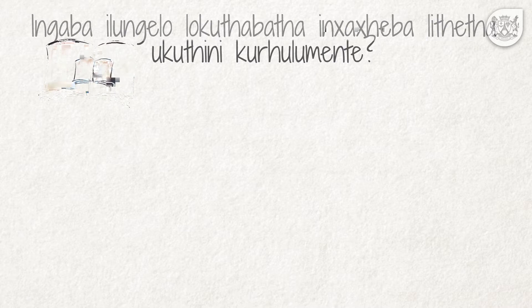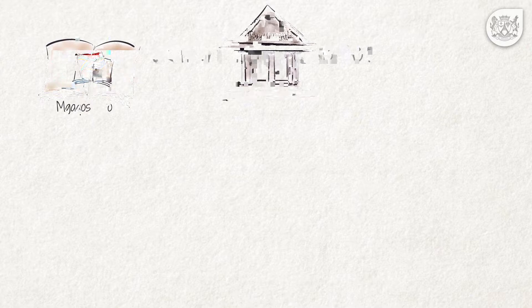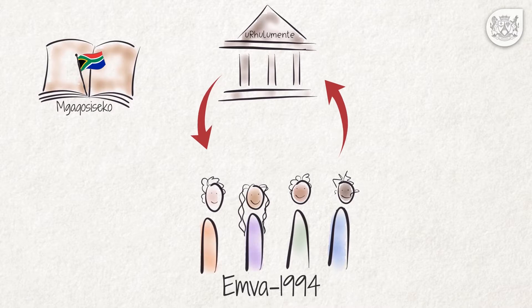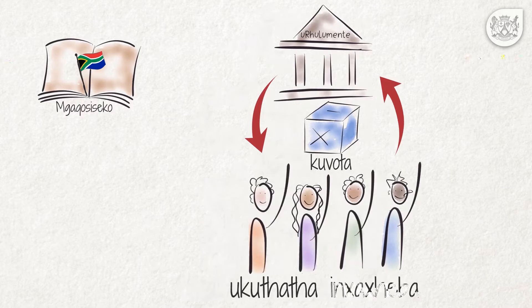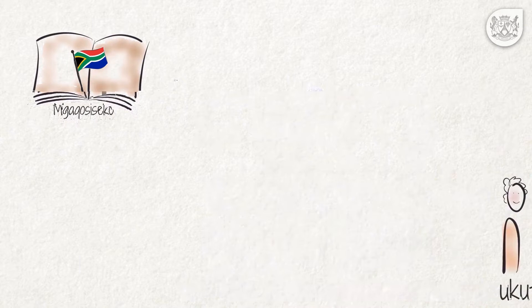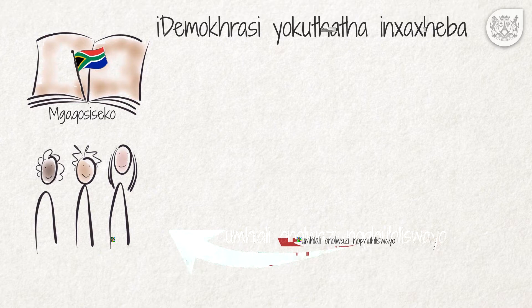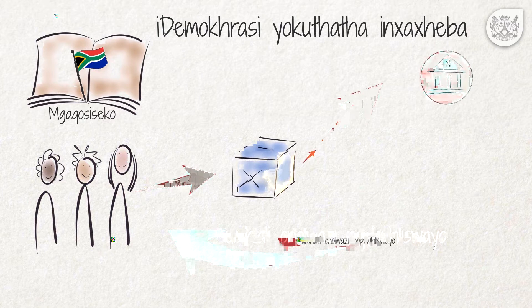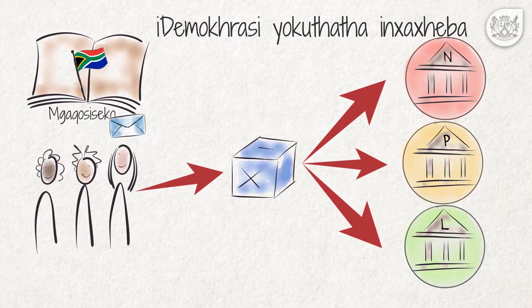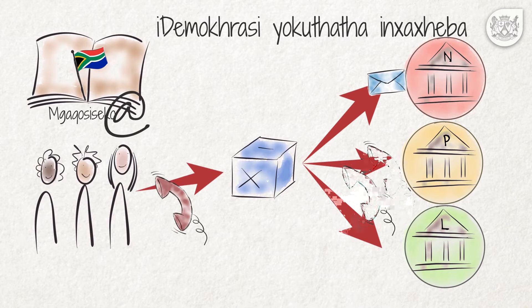Ingaba ilungelo lokuthabatha inxaxheba lithetha ukuthini kurhulumente? Xa umzantsi Afrika wasisizwe esiselo lwa ngabaninzi, indlela yokulaula yaphuma kuleyo ye ikhethela abantu ngokobuhlanga yaya kuleyo imisa abameli kurhulumente. Kubabone bonke abantu abakwi umzantsi Afrika banelungelo lokuvota nokuthabatha inxaxheba kuinkqubo zokukhethwa zedemokrasi. Umqathango womzantsi Afrika ufuna ukuba ukulawla kubetelele idemokrasi yokuthabatha inxaxheba esekeke ukubini mhlali onolwazi nophuhlisiweyo.